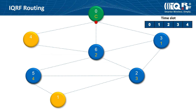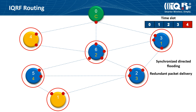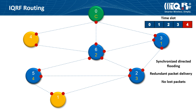In the IQRF network, communication is natively started by the coordinator. It sends a command or request to the network. Each of the nodes involved in routing repeats this message in its time slot. This type of propagation of the message in the IQRF network is called synchronized directed flooding. You can see that there are redundant lines that make the IQRF network really reliable because nodes get a message in different time slots from many of their neighbors. Every repeating of a message by a node is called a hop.